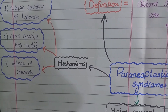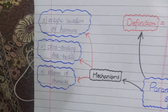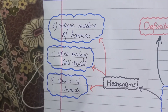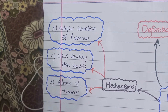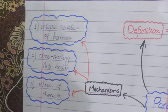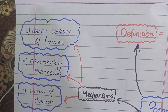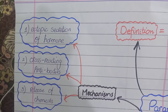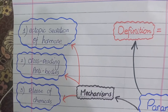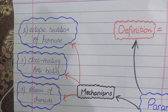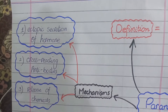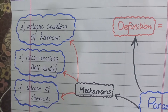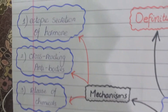Let's move to the mechanisms of paraneoplastic syndrome. Paraneoplastic syndromes can occur by one of three mechanisms. The first mechanism, which we have already learned, is by the ectopic secretion of a hormone. For example, if there is a tumor that secretes ACTH or PTH — that is parathyroid hormone — it will cause distant systemic effects related to that hormone, and this we call a paraneoplastic effect.